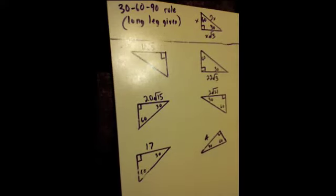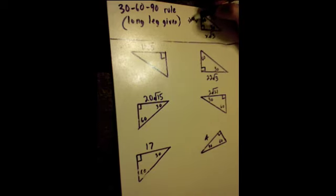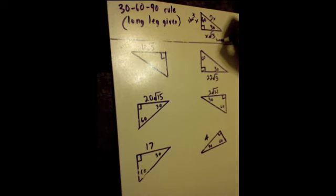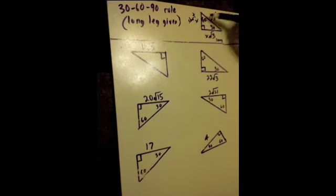In this video you're going to see how to use the 30-60-90 rule when you're given the length of the long leg. There are three sides to the right triangle: opposite the 30-degree angle is the short side, opposite the 60-degree angle is the long side, and opposite the 90-degree angle is the hypotenuse. The rule is: the long side is the short side times the square root of 3, and the hypotenuse is the short side times 2.